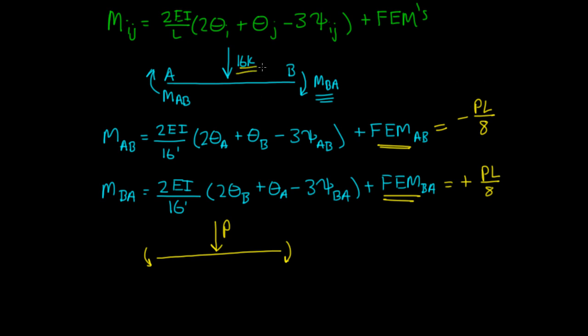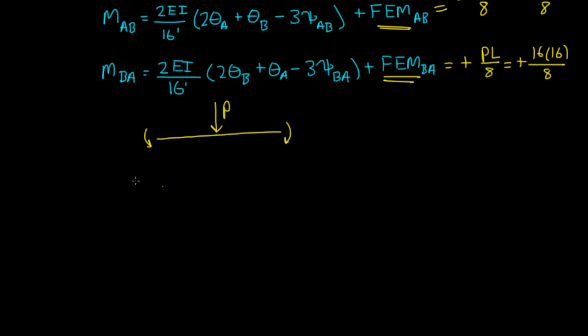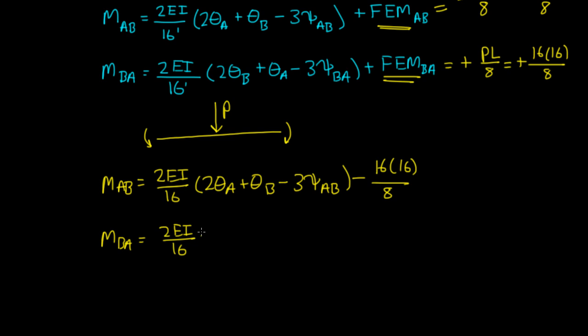Our P is 16 kips, so this is negative 16 times 16 over 8, and this is positive 16 times 16 over 8. So M_AB equals 2EI over 16 times (2θ_A plus θ_B minus 3ψ_AB) minus 16 times 16 over 8. And M_BA is 2EI over 16 times (2θ_B plus θ_A minus 3ψ_BA) plus 16 times 16 over 8.